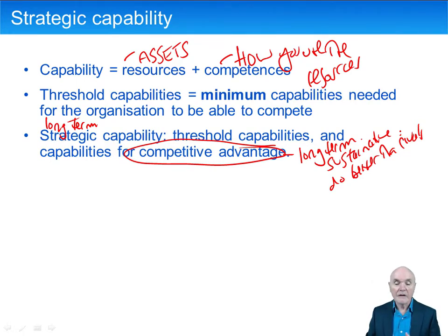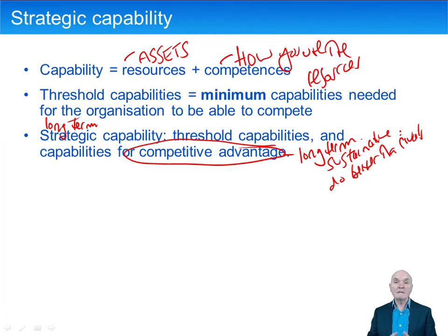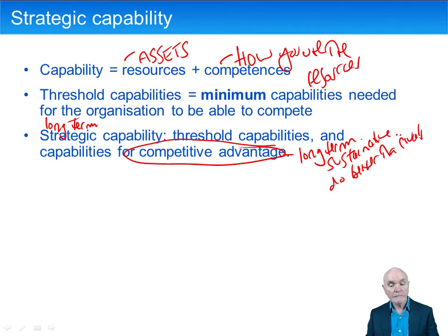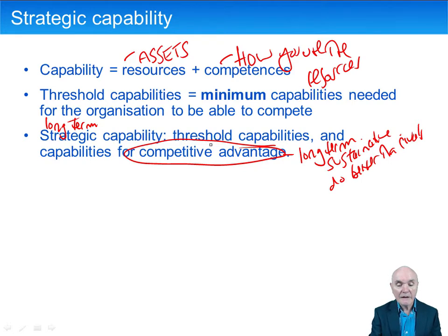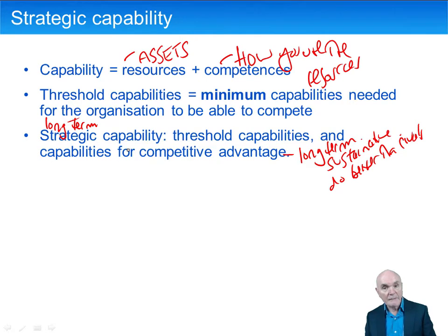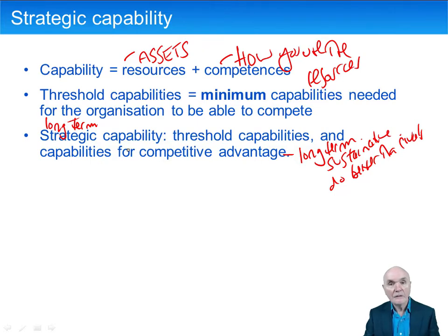Competitive advantage means long-term sustainable, so year after year after year you manage to beat the competitors — and this is what you need for long-term success. That's made up of these two parts: you have your strategic capability, which is the threshold capabilities plus additional capabilities that give you the edge over your competitors.